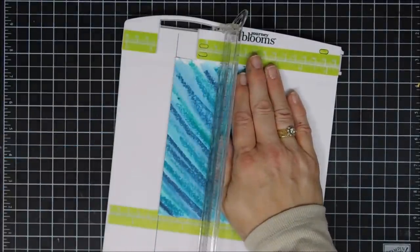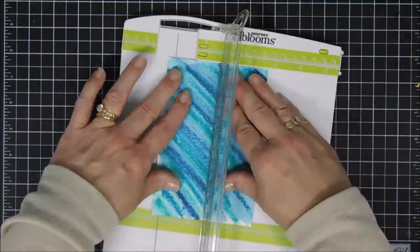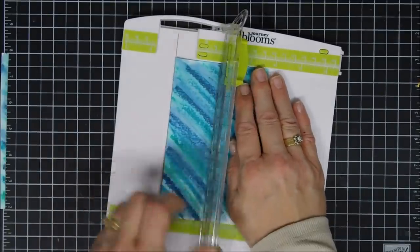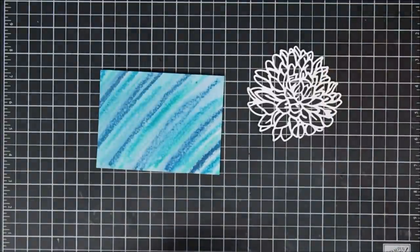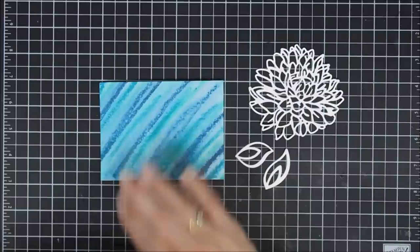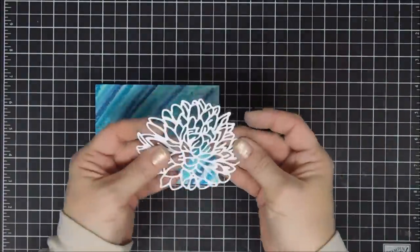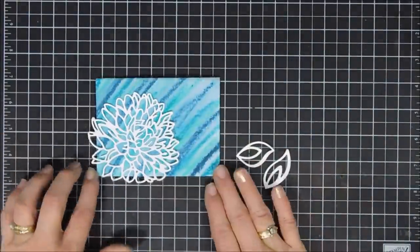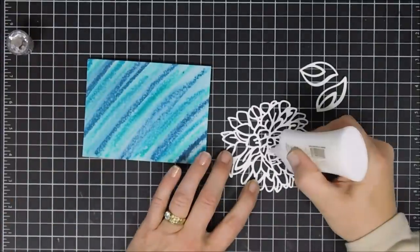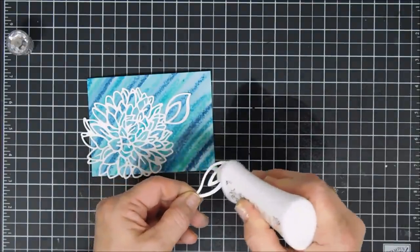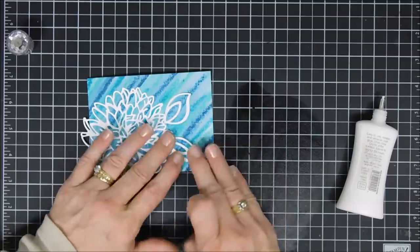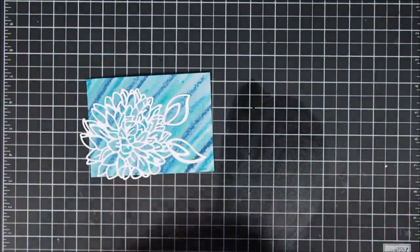These cards today are super easy because the Mums the Word die is just gorgeous. Since I am using the watercolor cardstock I put a piece of fun foam on the reverse side of my panel. This is going to help with the warping. Of course you could do that and tape down your panel and get even less warping on a hard surface, but I didn't do that today. Now I did die cut out my Mums the Word with white cardstock and I just placed it in the very lower corner of my panel with two leaves for this card, and I did overhang it just a little bit.